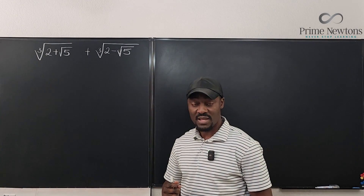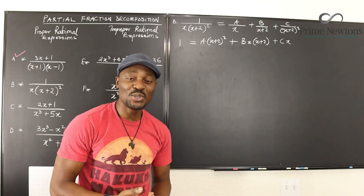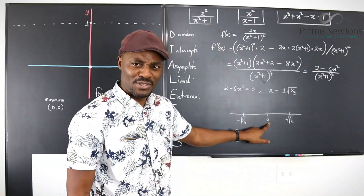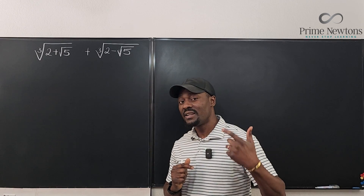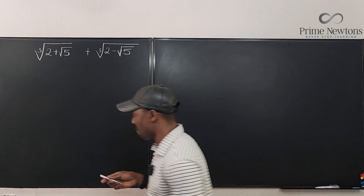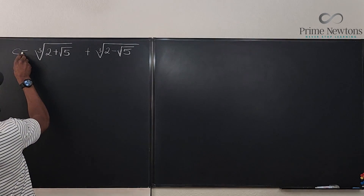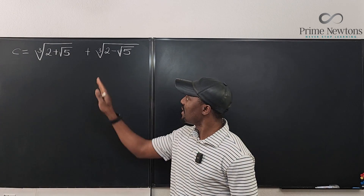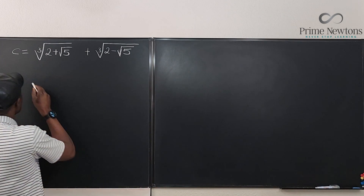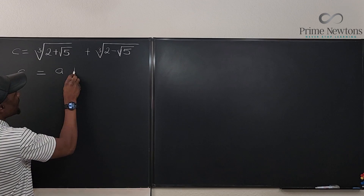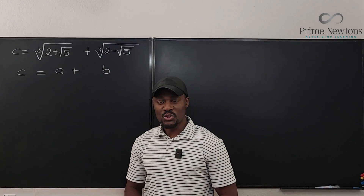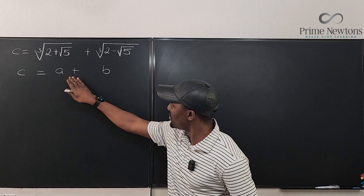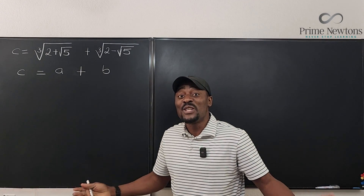Let's give them names. We'll call the final answer C. We can give the first cube root the name A and the second the name B. So we can say that C is A plus B — all the work we want to do will be on the basis of A plus B equals C.